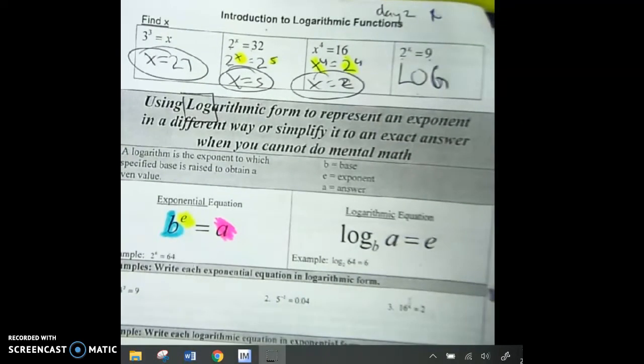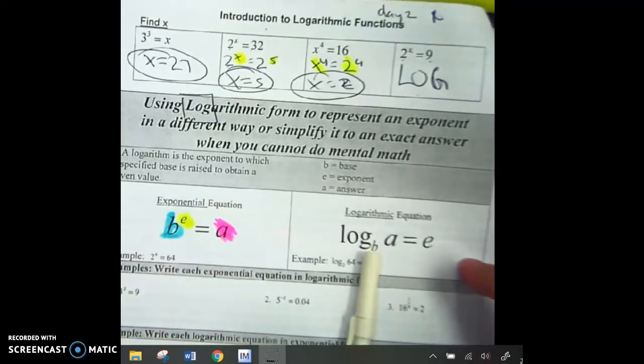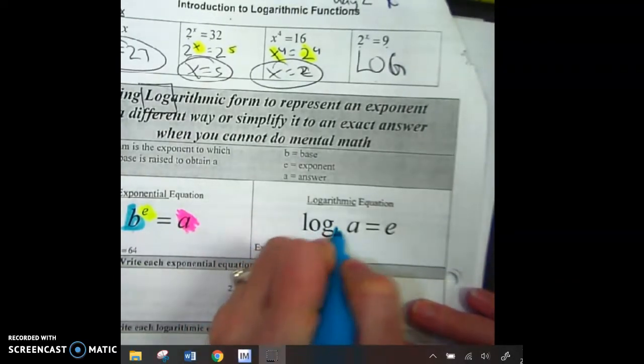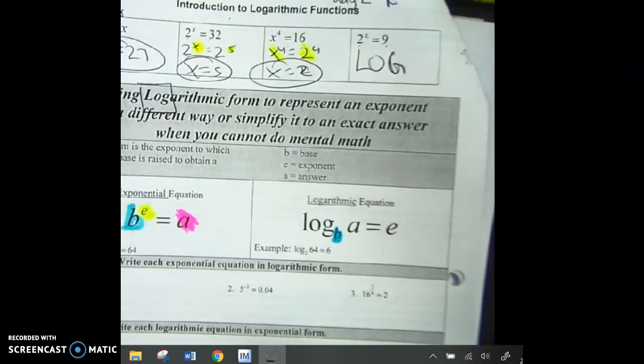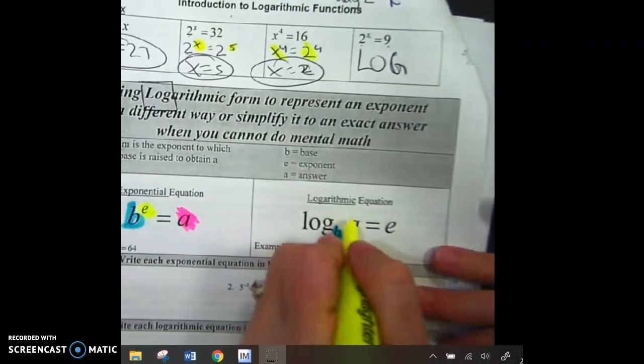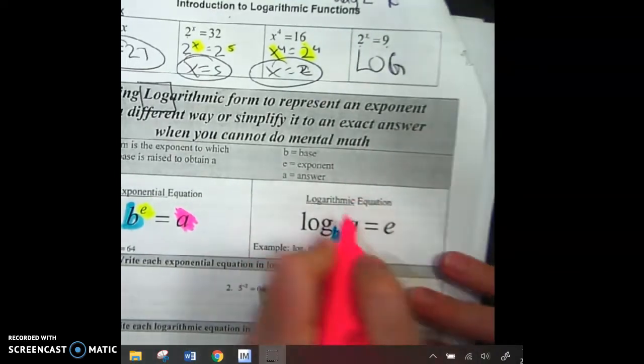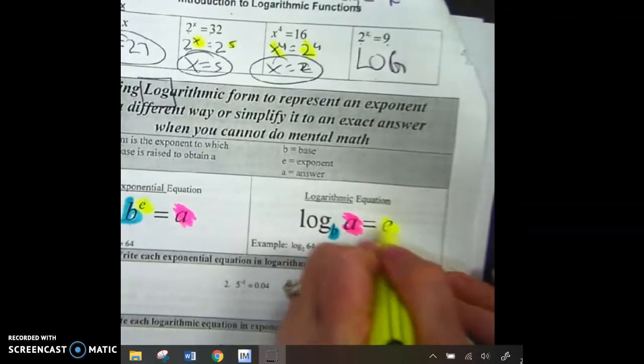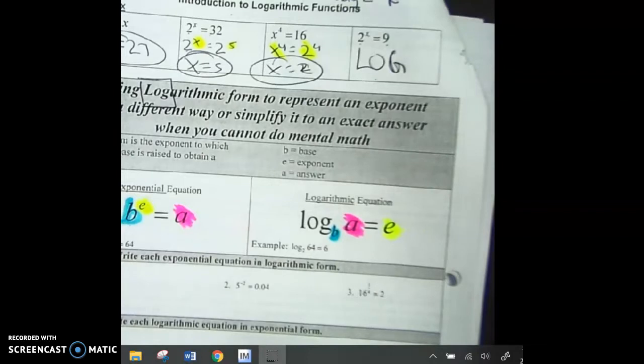So, when you see the B, that's your base. The E is the exponent, and the A is the answer. Now, what's going to happen is, when you get answers that you can't answer, you'll be changing them into log form, and then you'll be able to figure out the answer. So, let's look. In log form, the base is going to go way down here. So, it's really small. It's like a subscript. The answer goes here. And the little exponent will go here. Don't worry. It seems weird, but you'll memorize it.